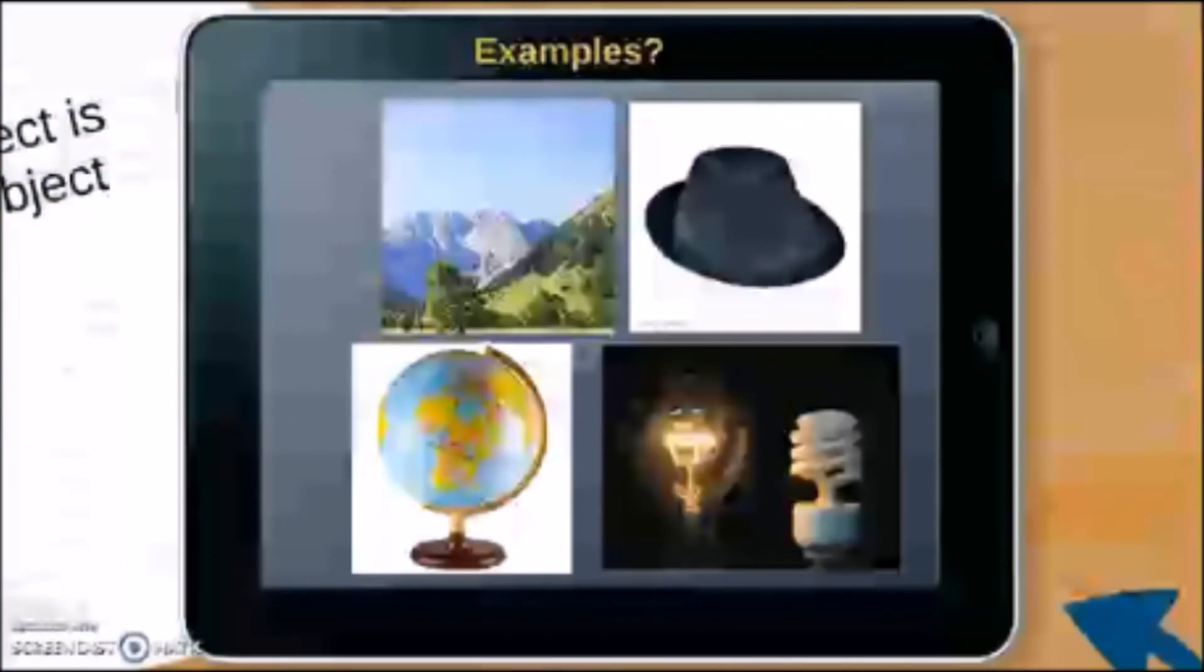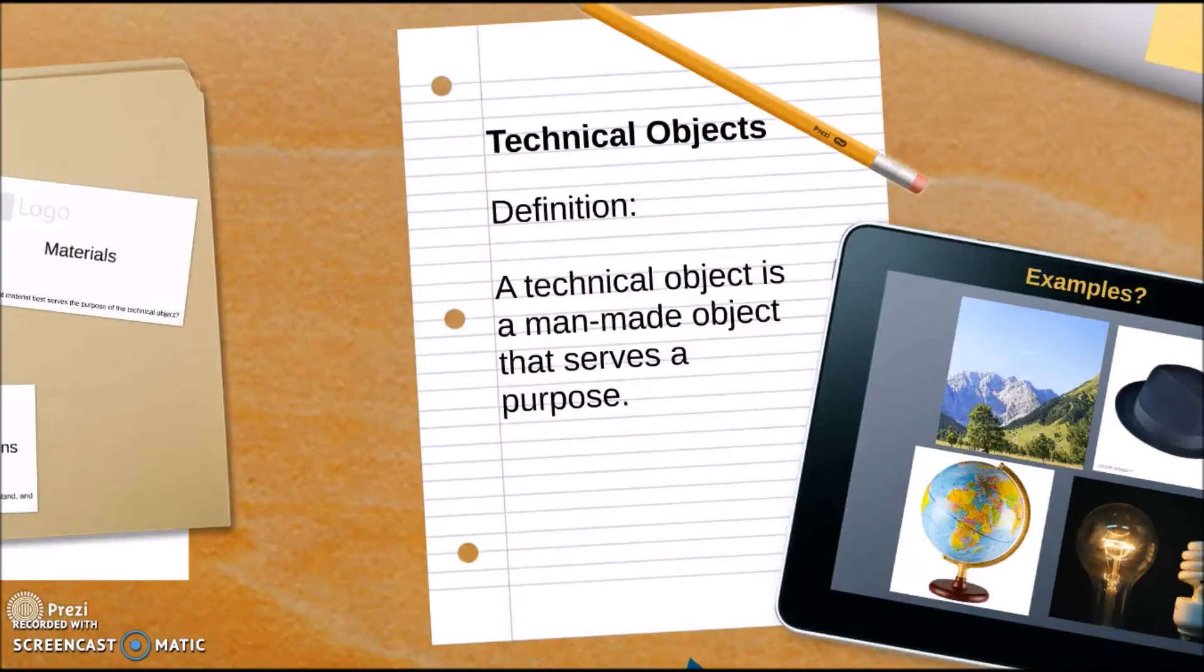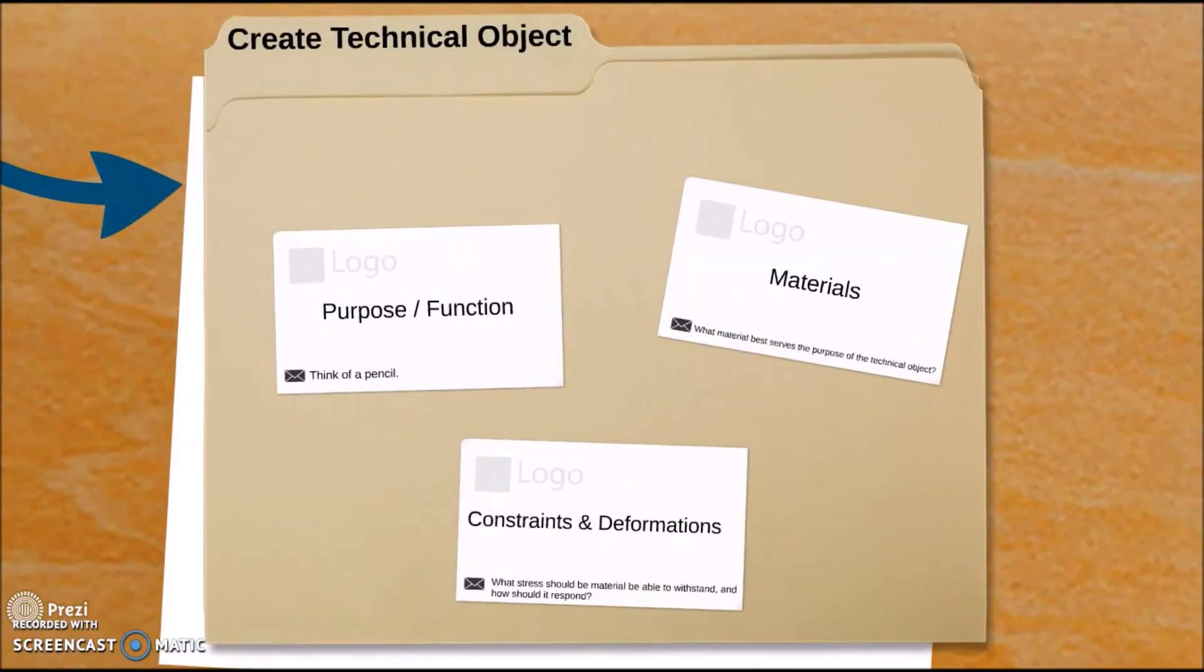Whereas the fedora, the globe, and the light bulbs are all made by humans. Now that we've defined and looked at examples of technical objects, let's consider what are the things that need to be thought of before a technical object is created. Well, firstly, you need to consider what is the function and purpose of it. You need to consider the materials that will be needed and the constraints and deformations.